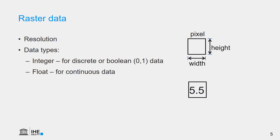We can also store decimal numbers, which we call floating point, and that's used for continuous data — data that represents gradual changes in the landscape.